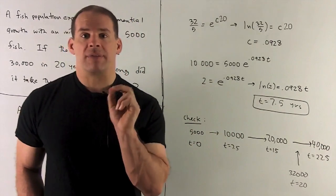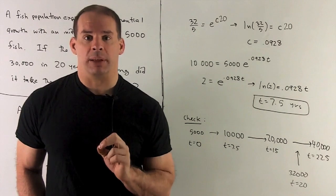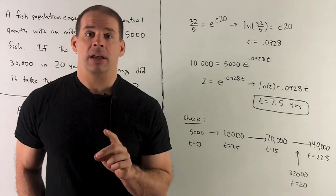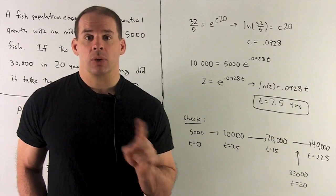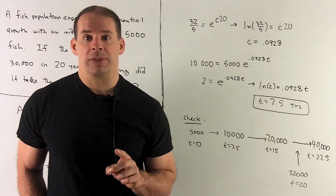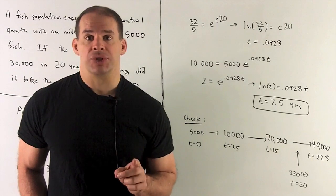So we want to solve for that t. That t is going to be our doubling time. I get rid of the exponential by taking the natural log of both sides. When we sort that out, we're going to be left with doubling time equal to seven and a half years.